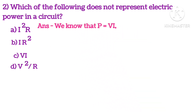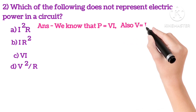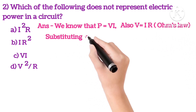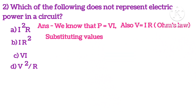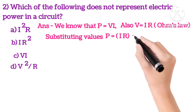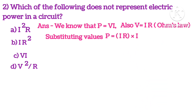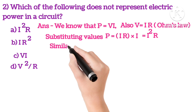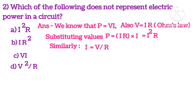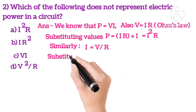We know that P equals V I, also V equals I R according to Ohm's law. So substituting values, P will be I squared R. So the first one is not the answer.